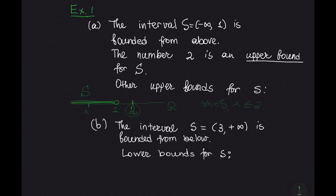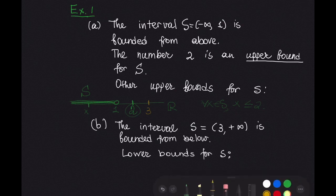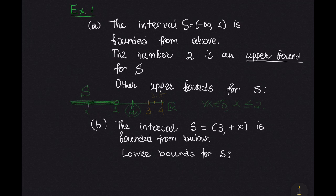What would be other upper bounds for s? Well, 3 is also an upper bound, and so is 4 and 3.5. Any number that lies completely to the right of the set s is an upper bound for s.